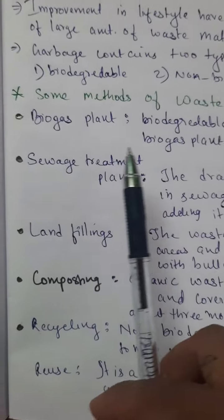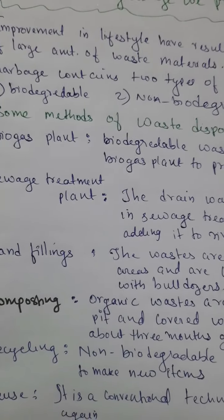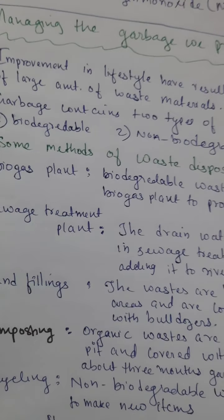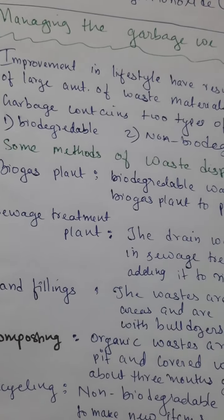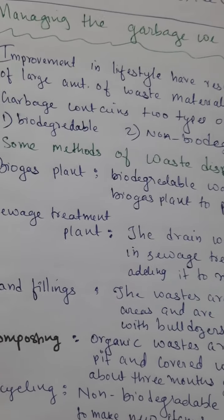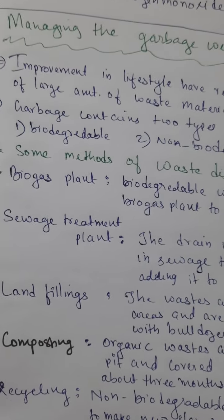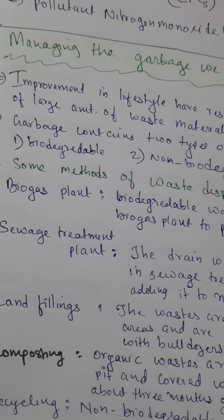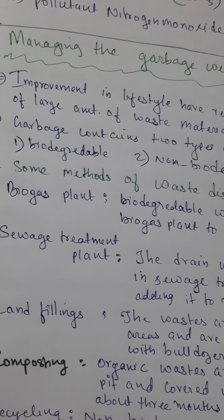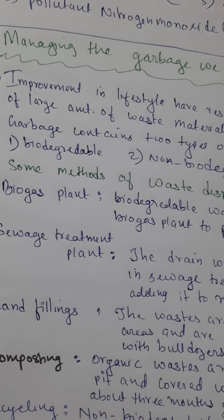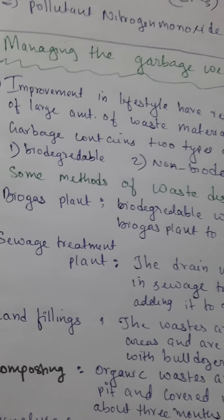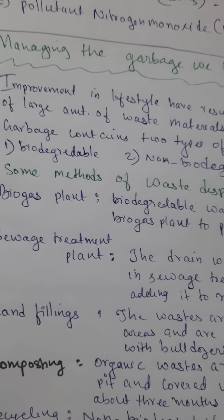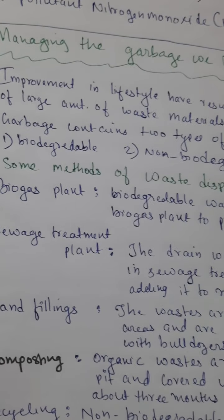First method: biogas plant. Biodegradable waste can be used to produce biogas and manure. You have heard about gobar gas — a large tank where dung is kept for decomposition. Since decomposition is an exothermic reaction, it releases heat and gas. That gas can be used for cooking (stove/chula), and the remaining material becomes manure. So some biodegradable waste can be put in a biogas plant to produce biogas and manure.